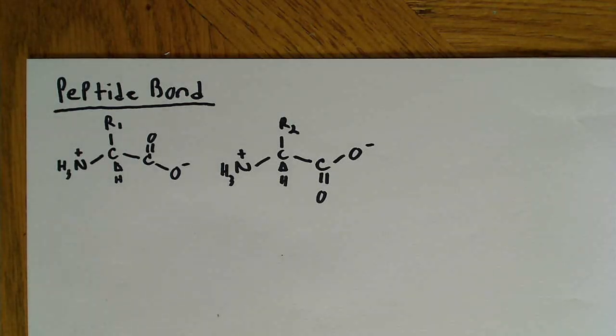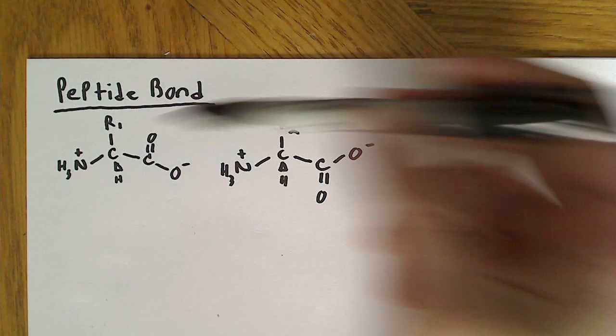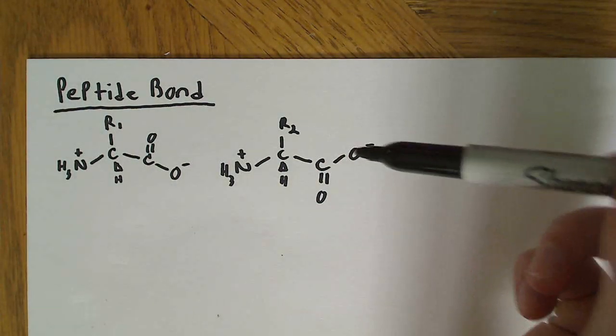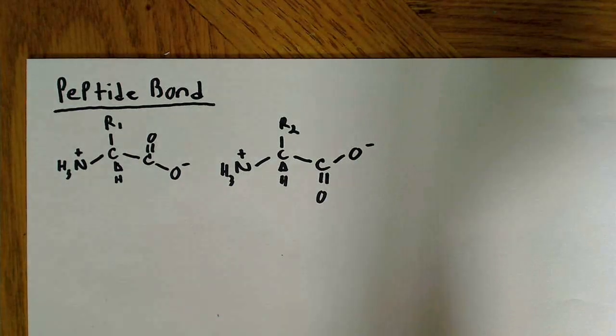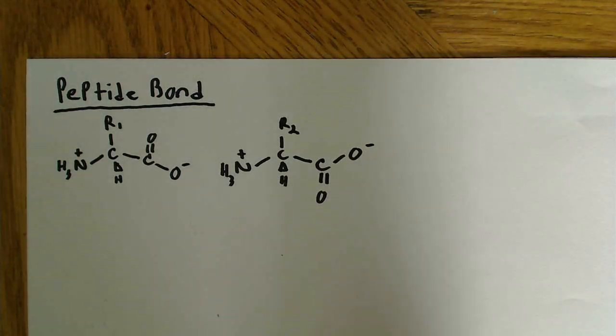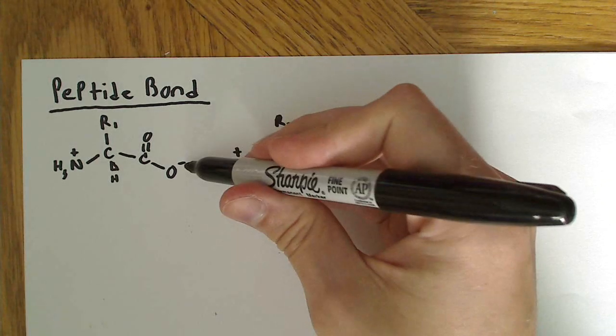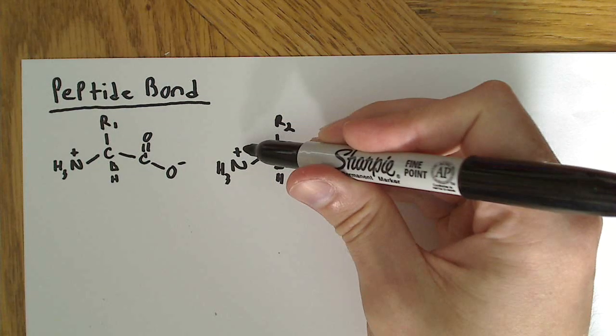What I drew here were just two generic amino acids. We don't know exactly what they are. I just labeled them R1 and R2 for the side chains. It really doesn't matter in this case, because what I'm trying to show is the peptide bond. And I'm also showing the charges. We have a negative charge over here and a positive charge over here.